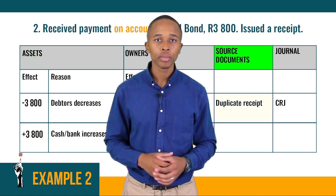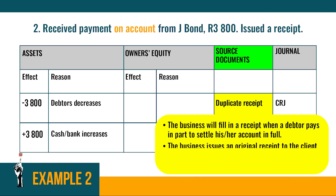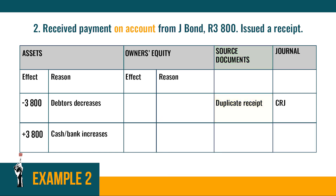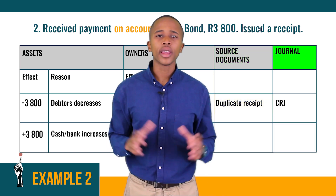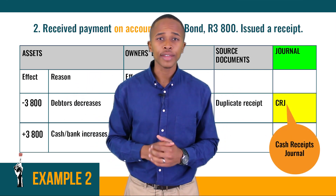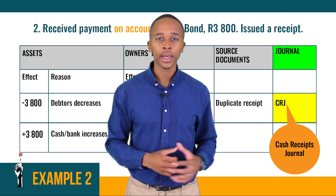For the source document: when a debtor pays in part or to settle his or her account in full, the business fills in a receipt. The original receipt goes to the client and the business keeps the duplicate to record the transaction in the Cash Receipts Journal (CRJ). The Cash Receipts Journal is the journal used to record all payments received by the business, including payments from debtors.